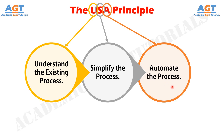An automation migration strategy might be implemented for a new product that has not yet proven itself. This is the USA principle of automation. We will learn in detail about the 10 strategies for automation and process improvement and the automation migration strategy in the next lectures.